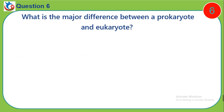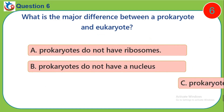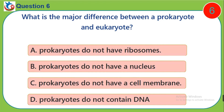Question 6. What is the major difference between a prokaryote and a eukaryote? A. Prokaryotes do not have ribosomes. B. Prokaryotes do not have a nucleus. C. Prokaryotes do not have a cell membrane. D. Prokaryotes do not contain DNA.